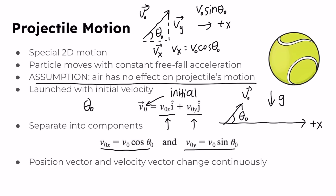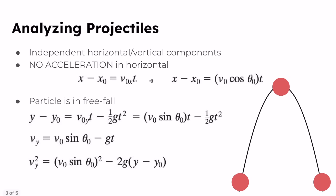In analyzing projectile motion, we're able to break the motion down into its horizontal and vertical components. This is what makes it a special case of 2D motion — it's very nice and easy to work with. We can simplify the motion into horizontal and vertical components because they are independent of each other, meaning the motion in the horizontal direction does not affect the motion in the vertical direction. The acceleration in the horizontal direction is always equal to zero: ax = 0.